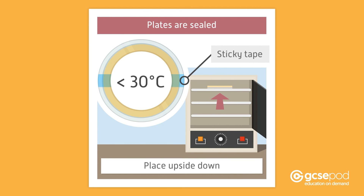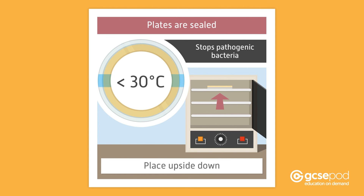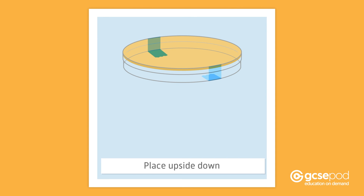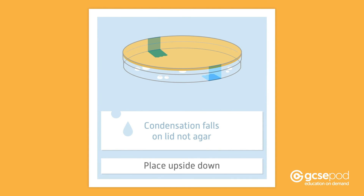The temperature used must not be more than 30 degrees Celsius. This stops the growth of any pathogenic bacteria. Placing the plates upside down means that any condensation that forms falls on the lid, not on the agar.